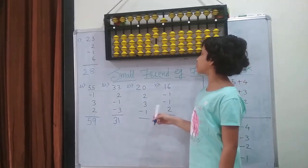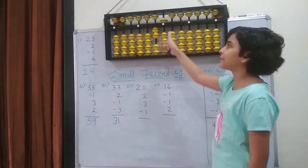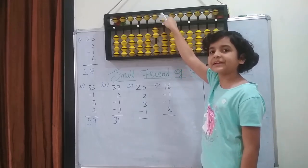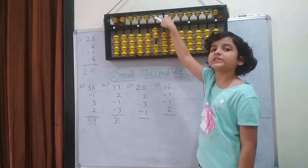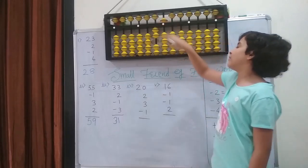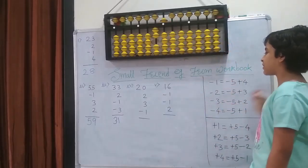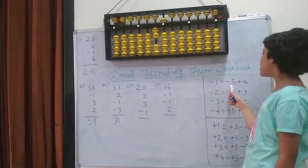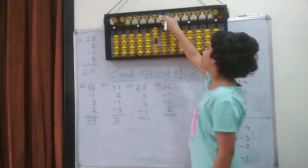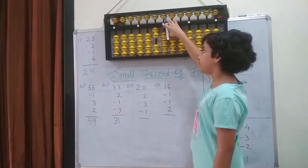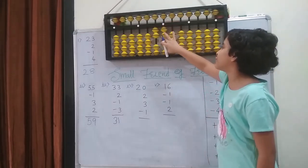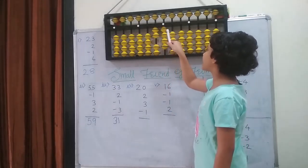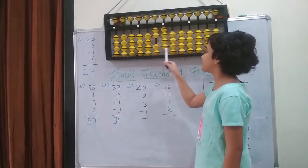Then I am going to minus 1. I cannot because I have no beads left. I have to check if the upper bead is available or not for subtraction. This time it is available, means we can do the subtraction formula, which is minus 1 equals to minus 5 plus 4. Minus 5 plus 4: 1, 2, 3, 4. So the answer is 2 and 1, 2, 3, 4 — that is 24.